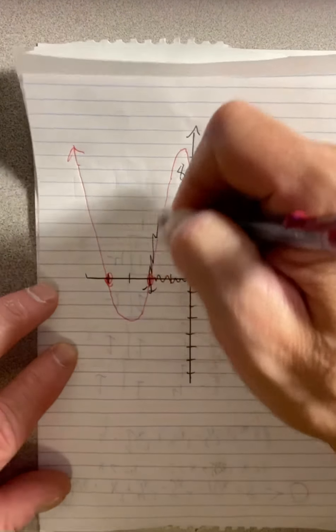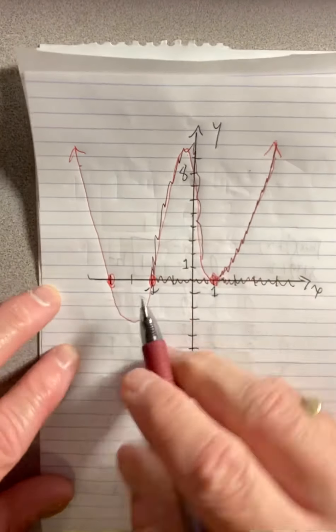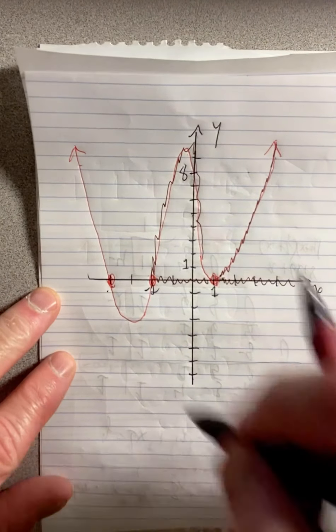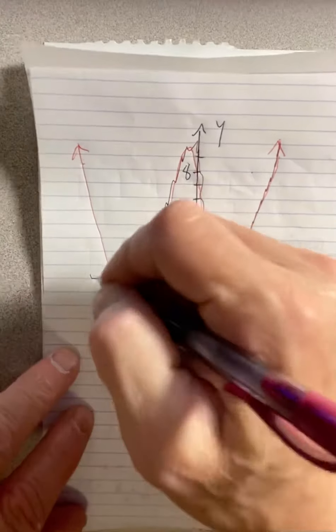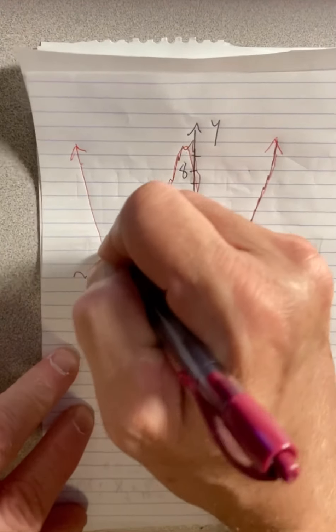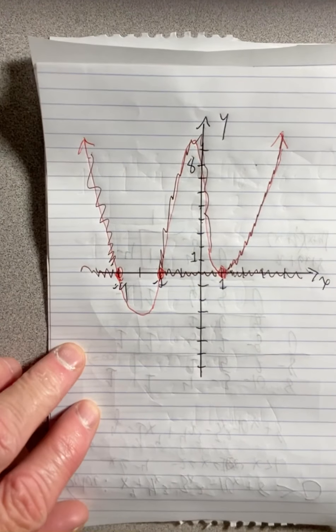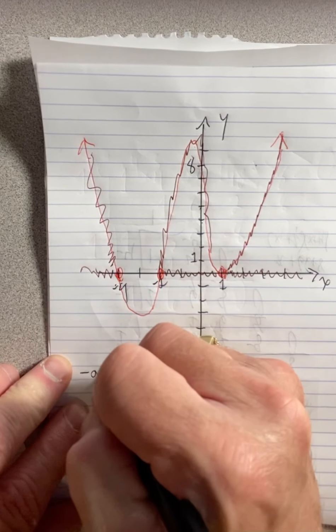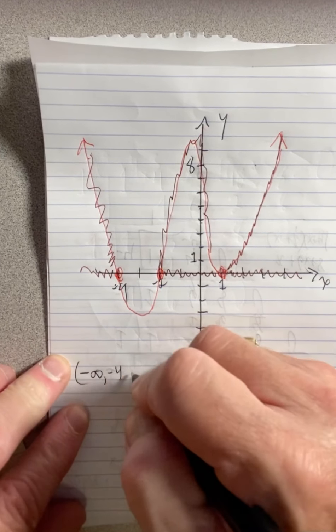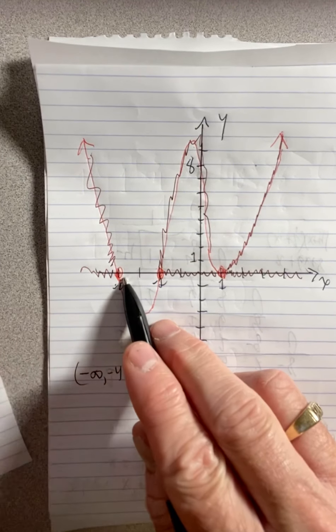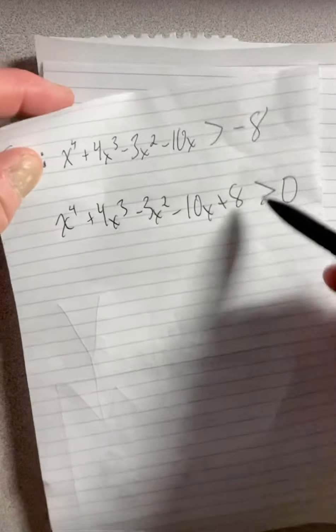It's also above. And also before negative four. Anywhere out here. Let's see if we can write that. So it's from negative infinity to negative four, not including negative four. Negative four is zero. And this is greater than zero, not equal to zero. So it's not including negative four.